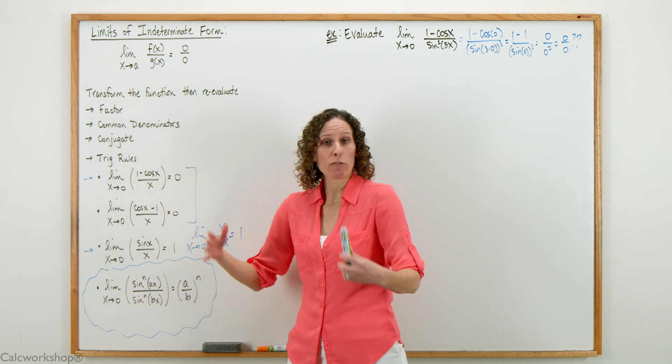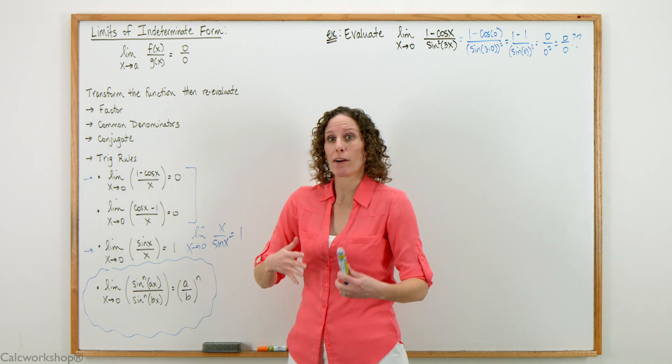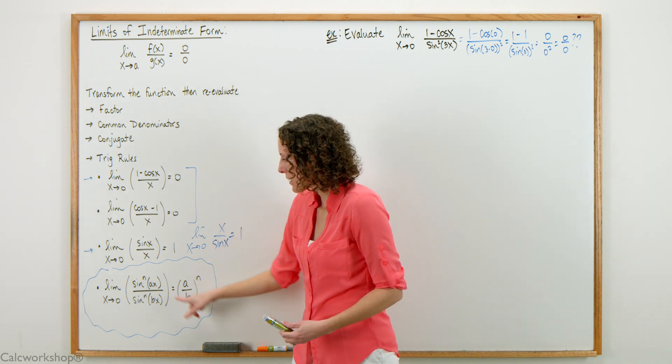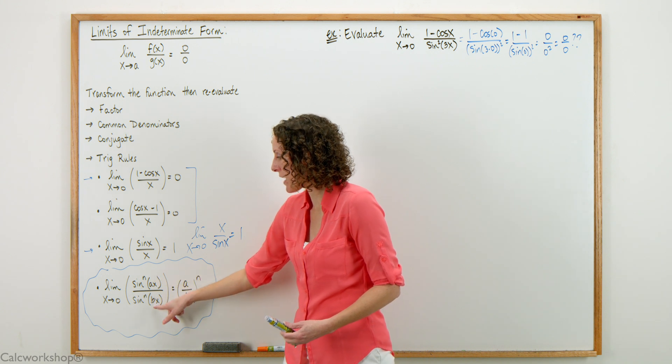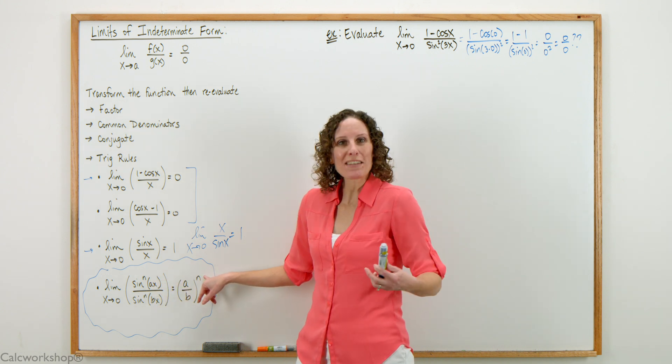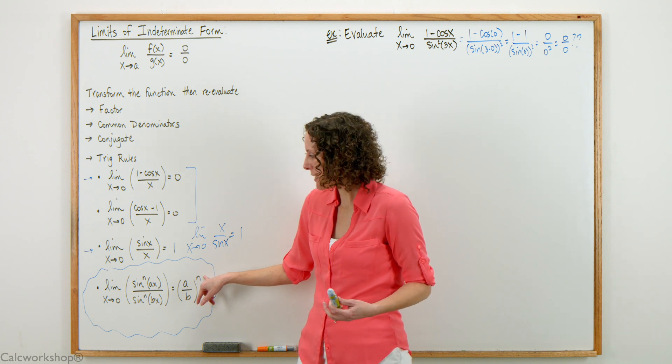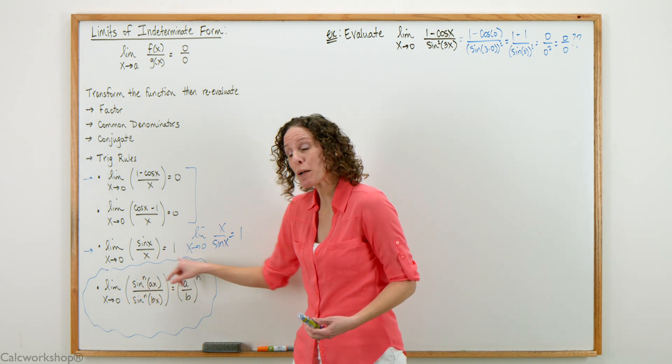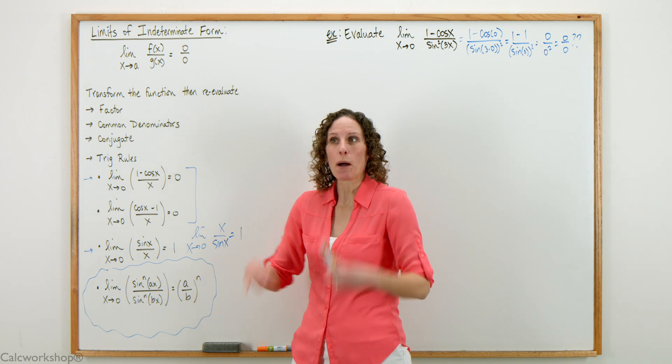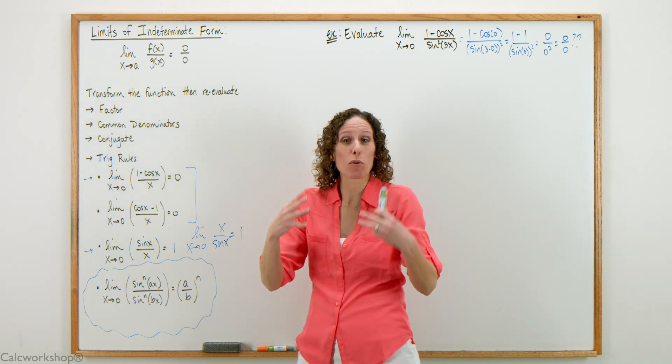When you have the limit as x approaches 0 and you have a sine function over a sine function with the same power—sine over sine, sine squared over sine squared, sine to the fifth over sine to the fifth—all we have to do is divide those leading coefficients and raise it to the power of the sine function itself. This is very powerful when we've got a trig function over a trig function.